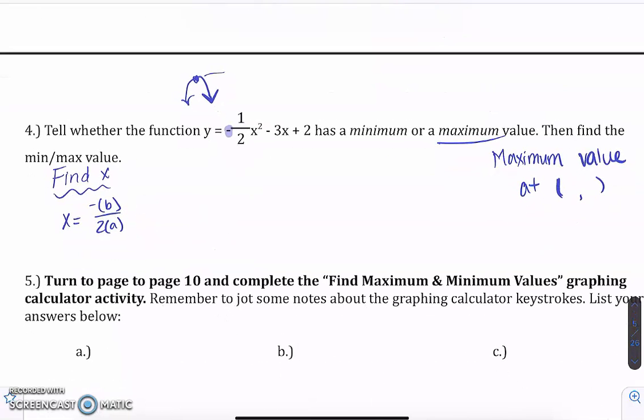So looking at your equation, this is your a, your b is with your x, c is the constant by itself. So x is going to equal negative the b, so negative negative three, over two times your a, which is negative one half.